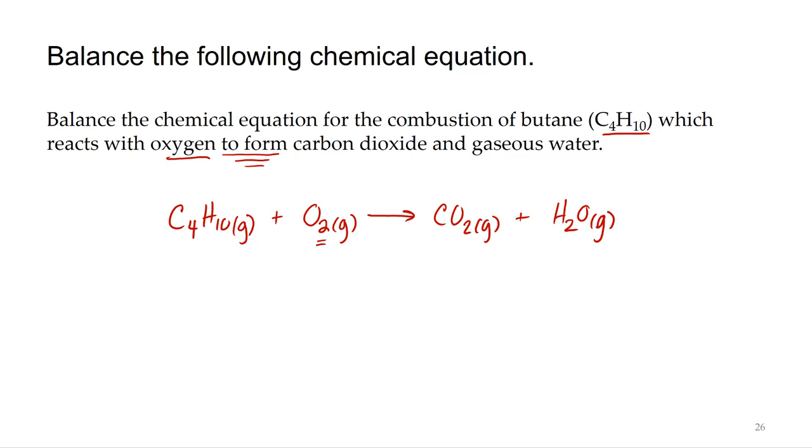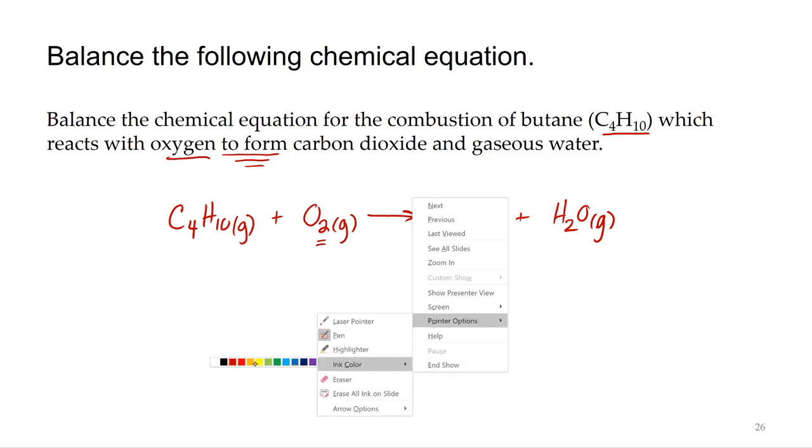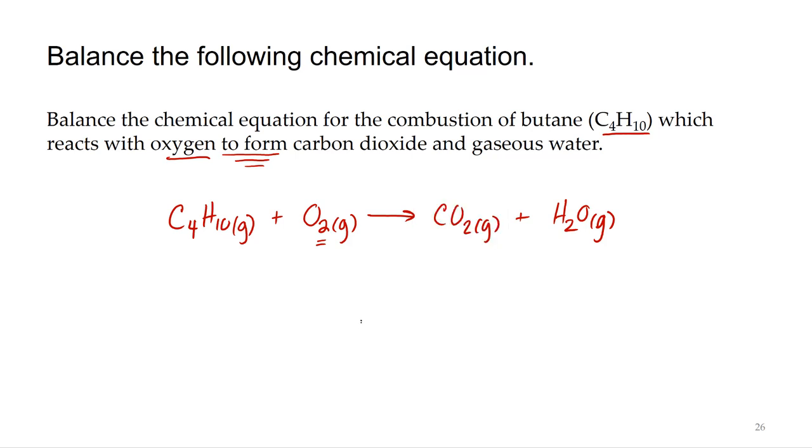Now we've got our skeletal equation or unbalanced equation, so let's set up our table and start balancing this chemical equation. We don't have any polyatomic ions we're going to balance. We do have an element all by itself, this oxygen, so we're going to leave that until the end, that way if we need to mess with the coefficients of oxygen we're only messing with oxygen, we're not altering the number of any other atoms.